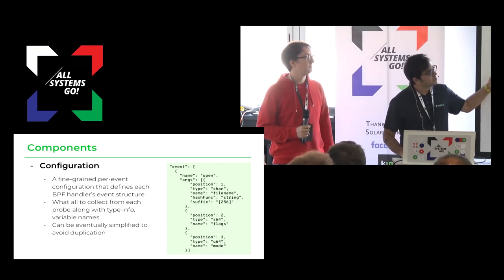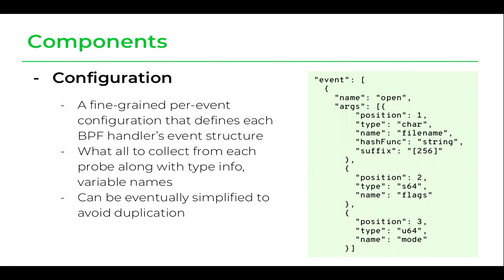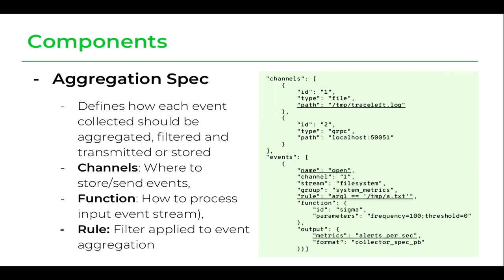A configuration looks like this: to trace an open event, you specify all its arguments — first position, second position, third position — as a per-event configuration. You specify what variables to collect at each argument position. This is done once and updated very rarely per kernel event. There's also an aggregator configuration where you define channels, save data to a log or send it to gRPC, set rules for events like open, and specify aggregation functions.